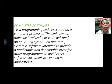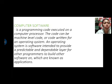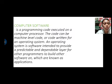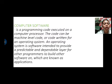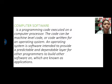Computer software is a programming code executed on a computer processor. The code can be machine-level code or code written for an operating system. An operating system is software intended to provide a predictable and dependable layer for other programmers to build other software on, which are known as applications.